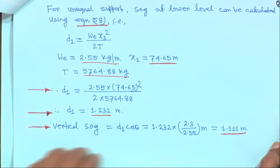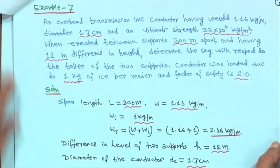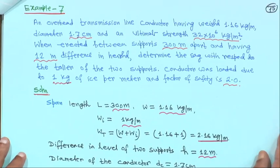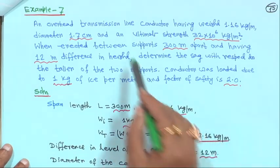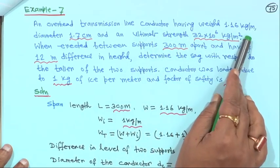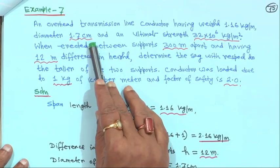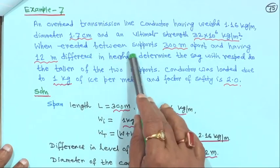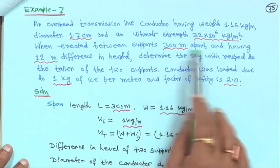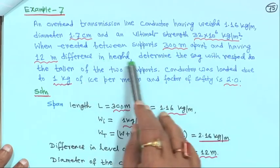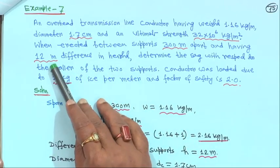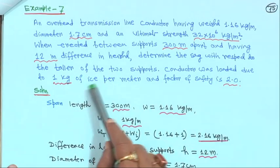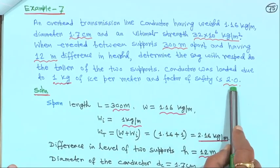Problems are simple; just a little bit of practice is necessary. Now taking another example — example 7. An overhead transmission line conductor has weight 1.16 kg per meter, diameter 1.7 centimeter, and ultimate strength 32 into 10 to the power 6 kg per meter square. When erected between supports 300 meter apart with 12 meter difference in height, determine the sag with respect to the taller of the 2 supports. The conductor is loaded with 1 kg of ice per meter and factor of safety is 2.